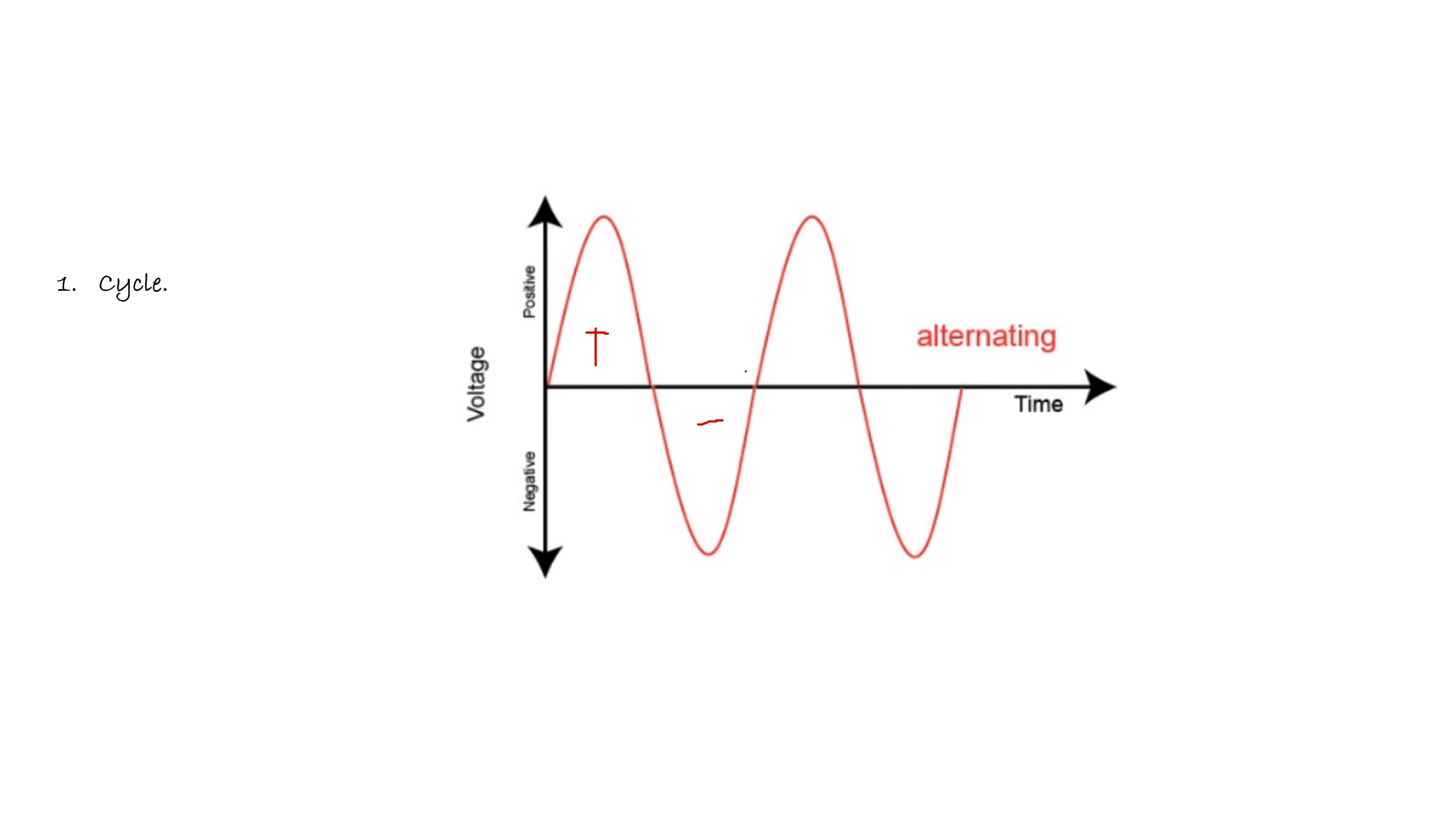After the completion of one cycle, the same shape of the waveform will be repeated. The second term is period or time period, which is the time required to complete one cycle. Here is one cycle, and it will take some time to complete this cycle. This time is called the period or time period of the cycle or alternating quantity.